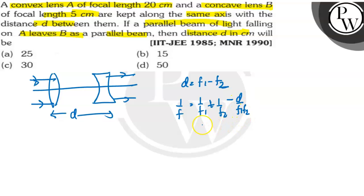For the emergent beam to be parallel, the power will be zero and the focal length will be infinite.